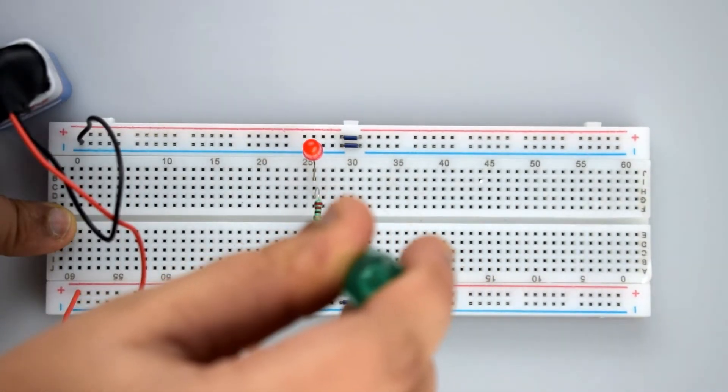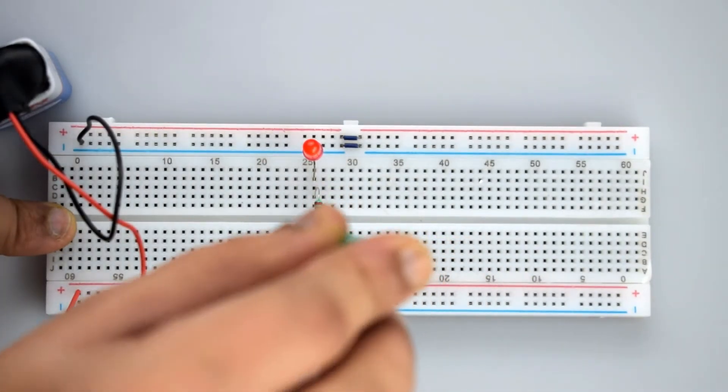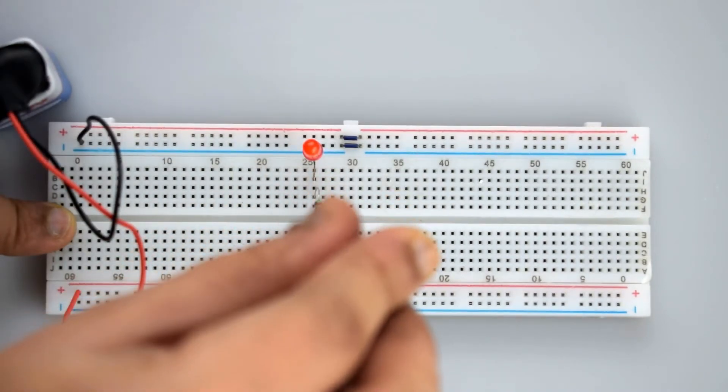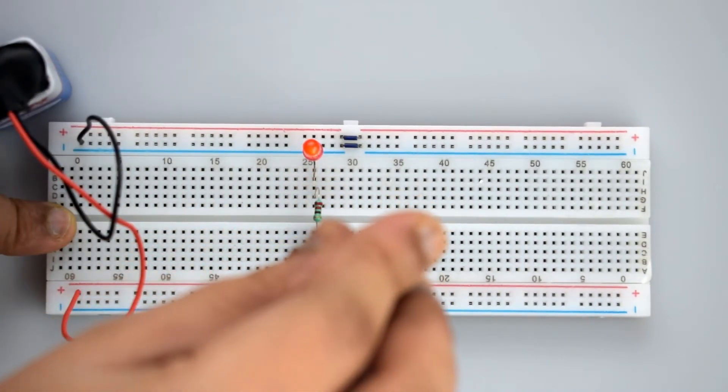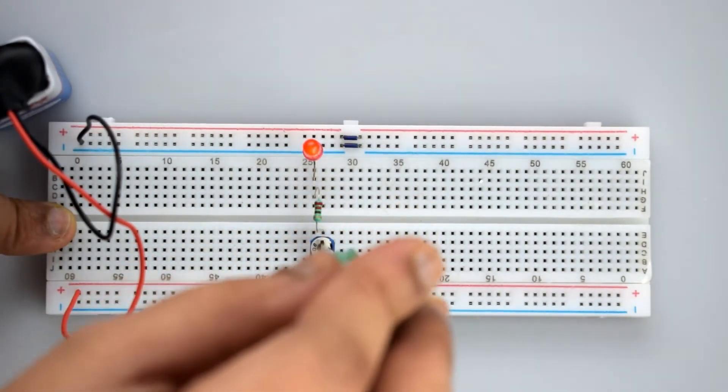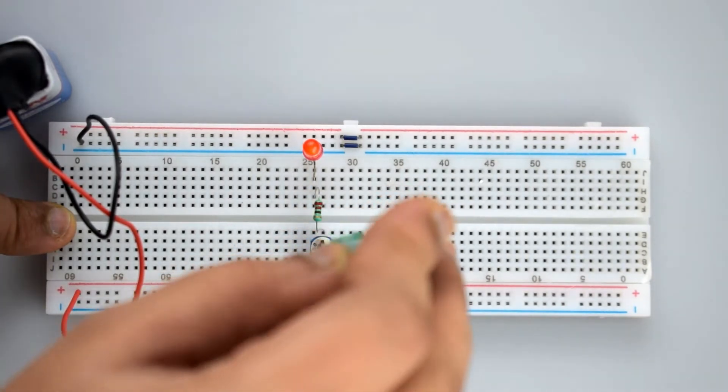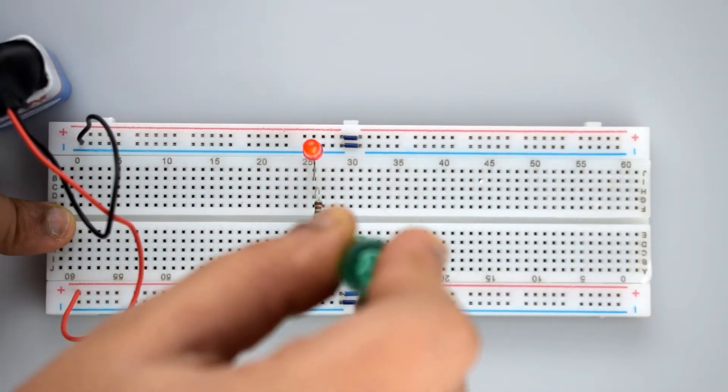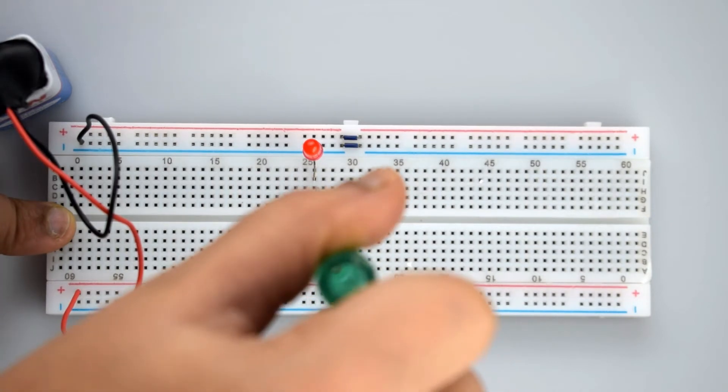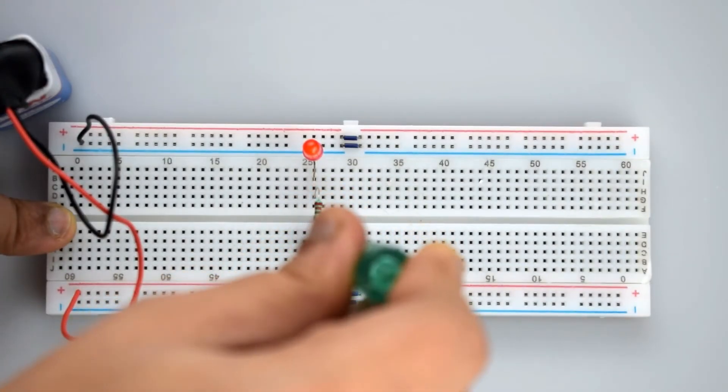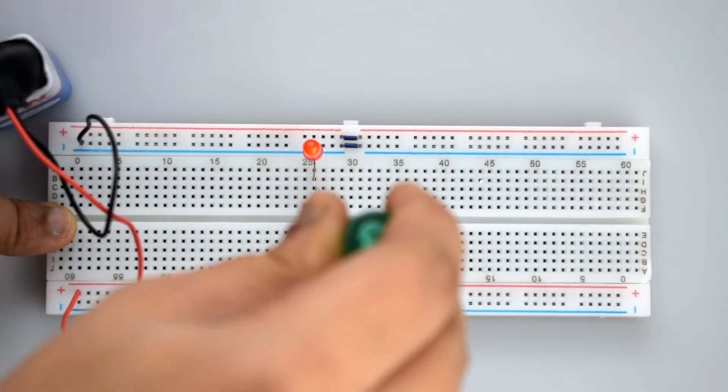The LED will vary. You can see the LED gets dimmer, and if you rotate on the left side, the brightness of the LED increases. You can see the brightness or intensity of the LED will vary.